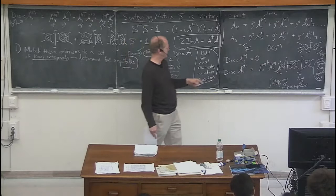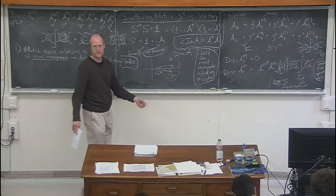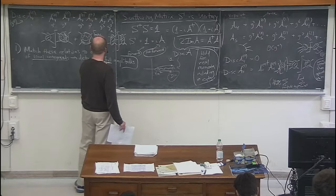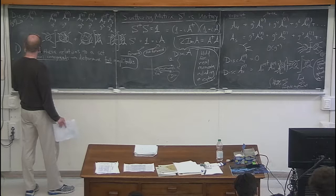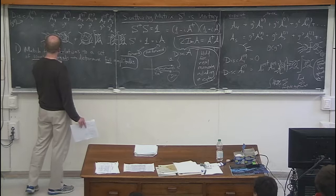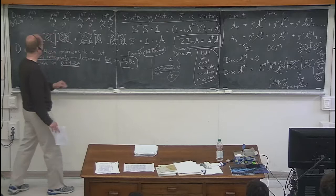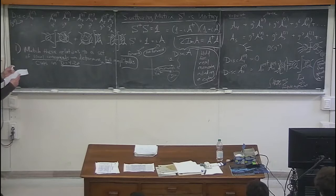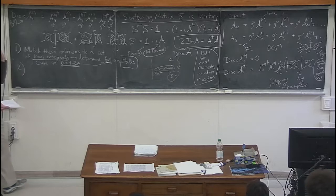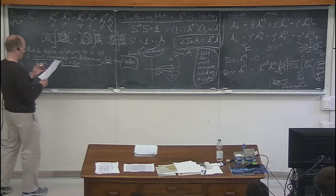You might think it would be hard to get the full amplitudes since unitarity only gives the cut part. Maybe there's some part of the amplitude without cuts. One trick that works is to do the cuts in dimensional regularization — d equals 4 minus 2 epsilon. You often have to do this anyway to regulate it, but if you do it seriously in 4 minus 2 epsilon dimensions, it turns out you can recover the full amplitudes.